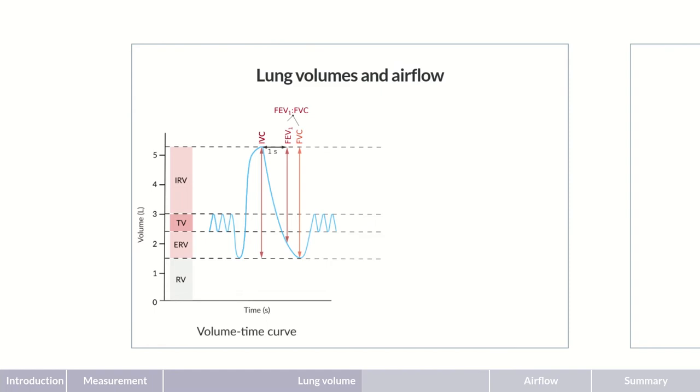Until now, we've presented these parameters in a volume-time curve to establish the basics. However, in clinical practice, representation in a flow-volume loop is more commonly used, as changes in lung pathology are directly reflected in the shape of this curve.